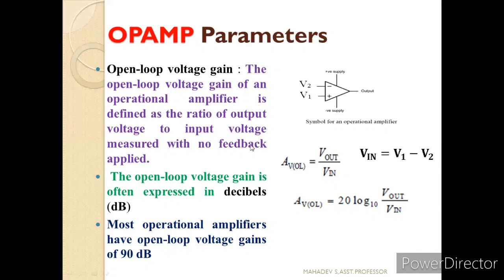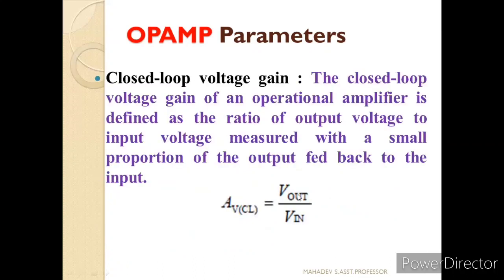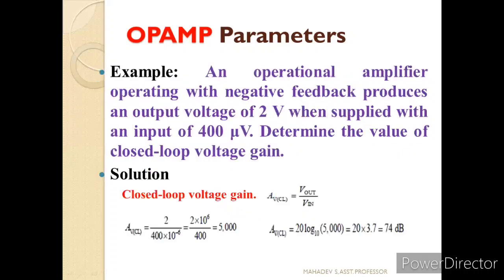Generally, the open loop voltage gain is measured in decibels, so AV(OL) = 20 log₁₀(Vout/Vin). Most amplifiers also have a closed loop voltage gain, defined as the output voltage to the input voltage with proper feedback connected to the input. The closed loop gain AV(CL) = Vout/VIN.